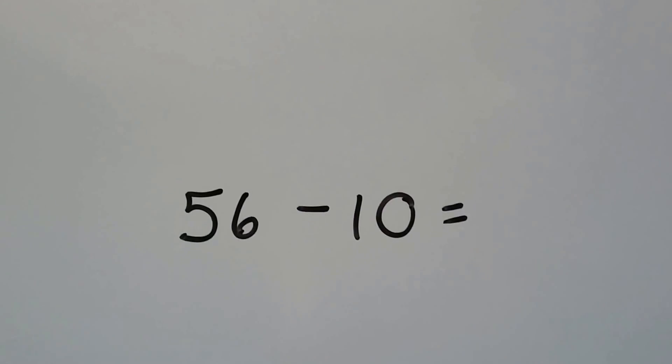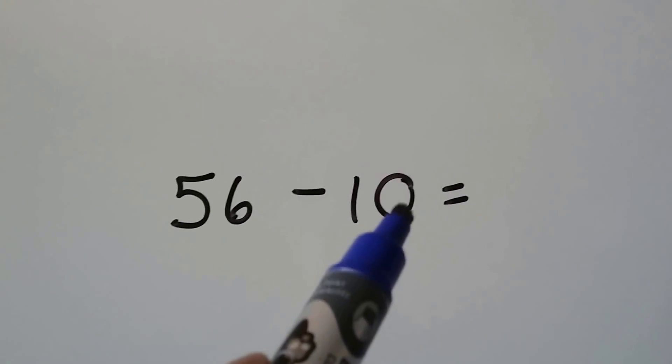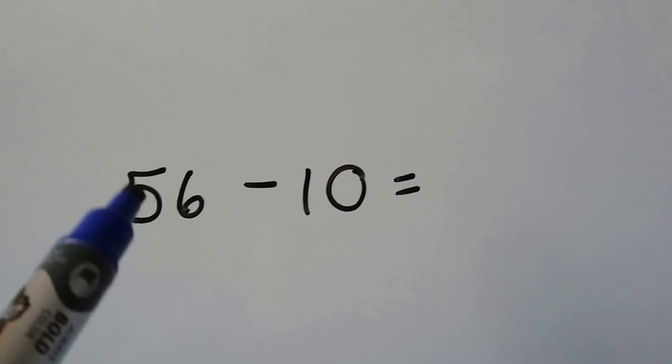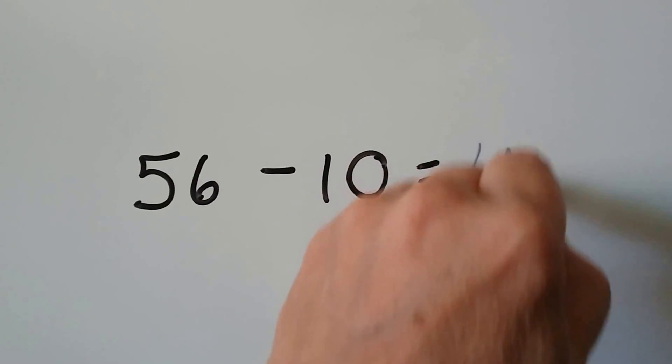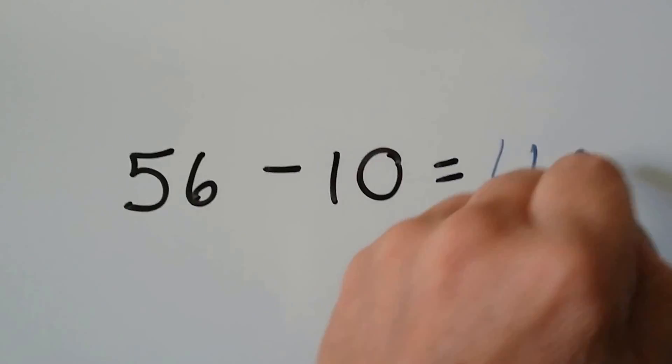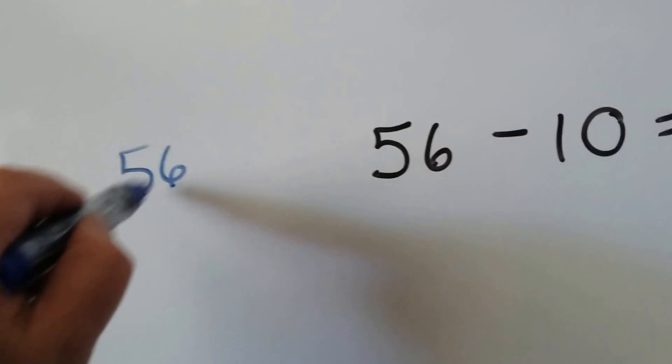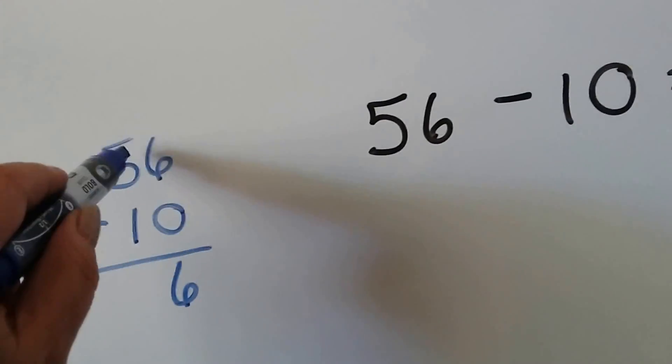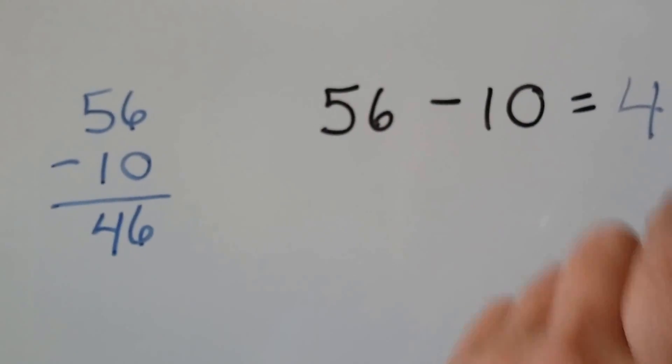Let's try it again. We have a 56 minus 10. We're not taking away any 1s. We're just taking away 1 ten. If we take 1 away from the 10s place, that would be a 4, wouldn't it? But we'd still have these 6 ones. If we had 56 and we took away 10, 6 take away 0 is still 6. 5 take away 1 is 4. We have 46.